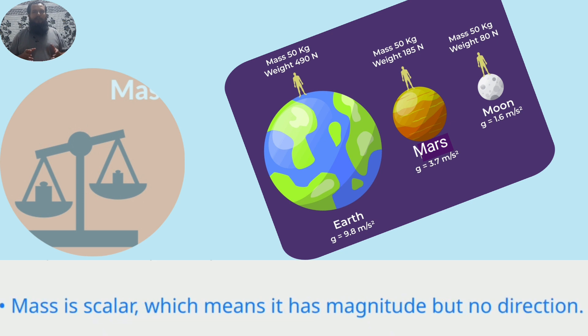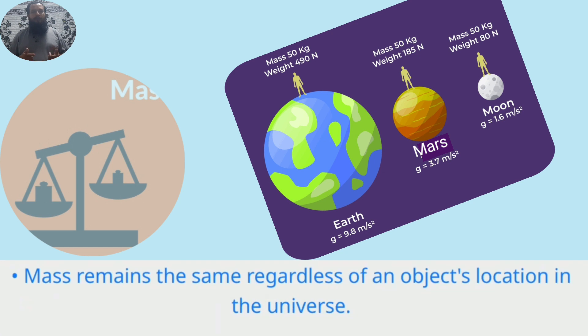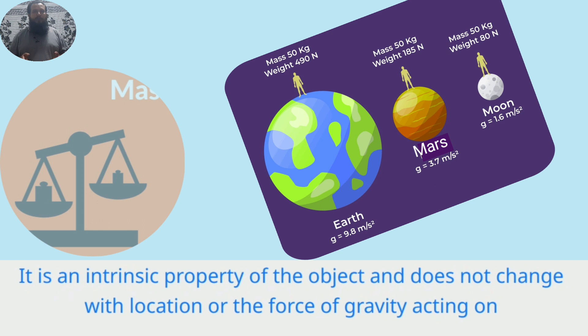Mass is scalar, which means it has magnitude but no direction. Mass remains the same regardless of an object's location in the universe. It is an intrinsic property of the object and does not change with location or the force of gravity acting on it.